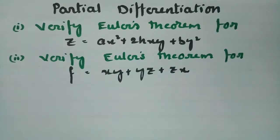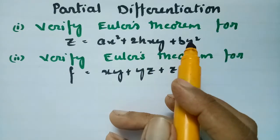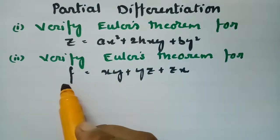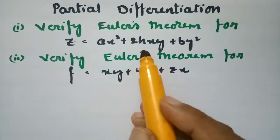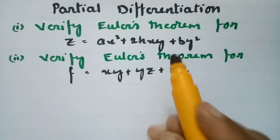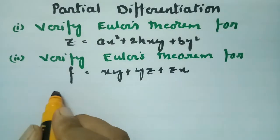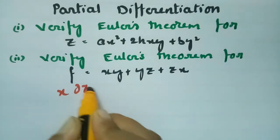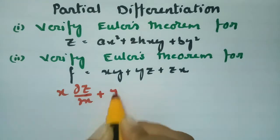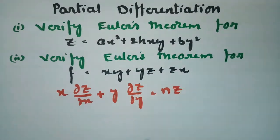In this video I am going to verify Euler's theorem for the function z equal to ax² plus 2hxy plus by², and also for the function xy plus yz plus zx. These problems are for partial differentiation. According to Euler's theorem we have x into ∂z/∂x plus y into ∂z/∂y equal to nz.